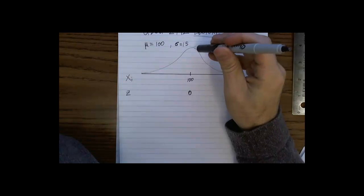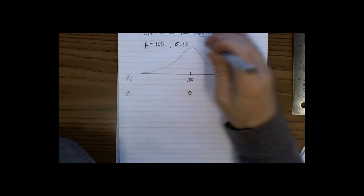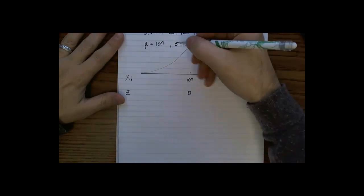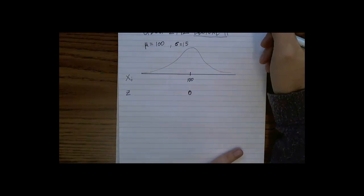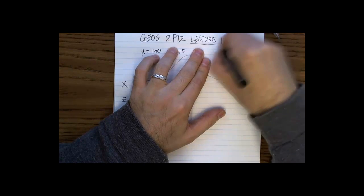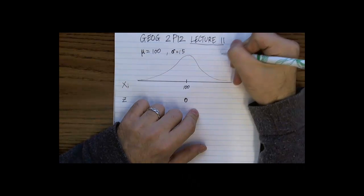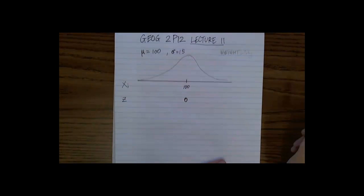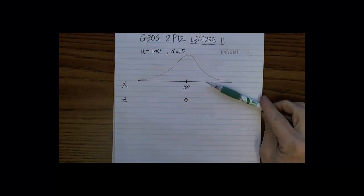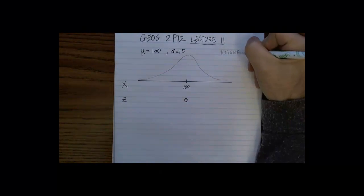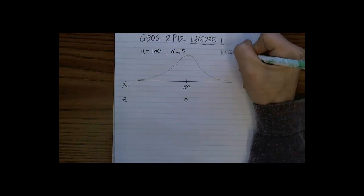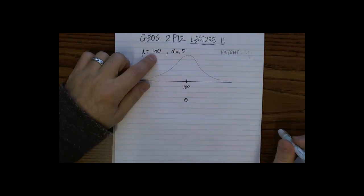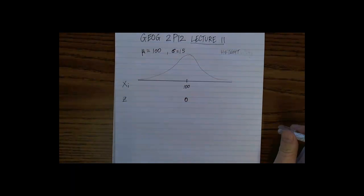So we know that the standard deviation is 15. And let's think about what this could be a measure of. So let's say that this is a measure, let's think of it in terms of height. And maybe it's a population of hobbits, right? Or halflings, if you prefer the more modern term. And the standard deviation is 15 centimeters. So 100 centimeters is the mean height of halflings, and 15 centimeters is the standard deviation.